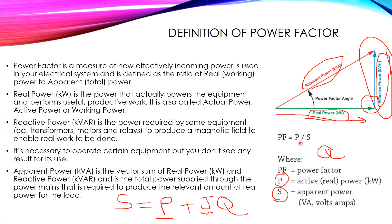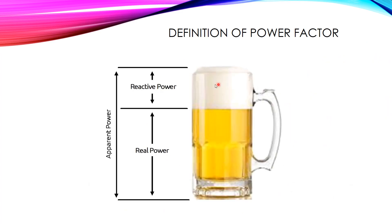The power factor represents the useful power P over the total apparent power S. A well-known analogy is a glass of beer: the liquid represents the real power — what is actually useful — and the gas or foam represents the reactive power, which does not provide useful output. The summation of these two gives us the apparent power.